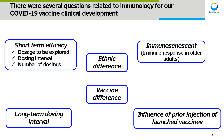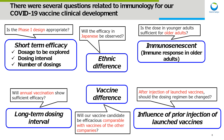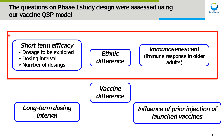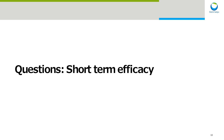In the project of our COVID-19 vaccine, there were several questions related to immunology for our clinical development. For example: Is the Phase I design appropriate? Will efficacy in Japanese subjects be observed? Is the dose in younger adults sufficient for older adults? Will annual vaccination show sufficient efficacy? Will our vaccine candidate be efficacious compared with vaccines from other companies? After injection of launched vaccines, should the dosing regimen be changed? These questions related to Phase I study design were assessed using our vaccine QSP model.